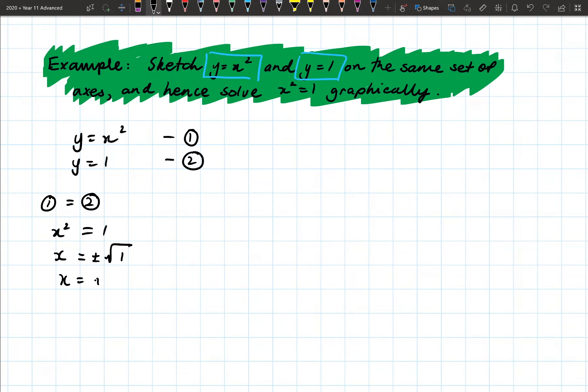And so last term, when we had a look at solving these types of equations, what you need to know is that we go x equals, because we're solving for a square, we have plus or minus square root of one. So x equals plus or minus one.